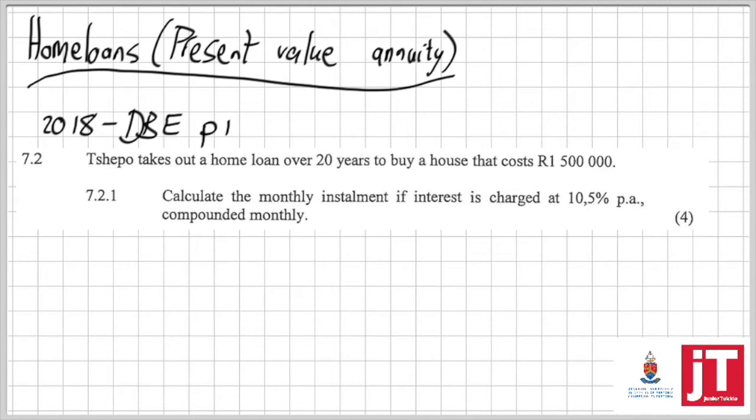Question 7.2 asks, TEPO takes out a home loan over 20 years to buy a house that costs R1,500,000. Calculate the monthly installment if interest is charged at 10.5% p.a. compounded monthly. As you would have seen in the decision tree video, it's always important: are we working with once-off payments or annuities? Well here the secret is looking at the word monthly installments. Monthly installments means that we are going to pay off periodically. When you pay off periodically, that's an annuity.